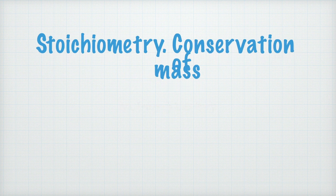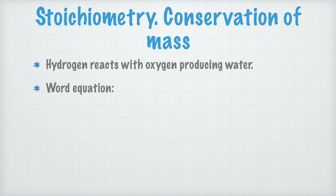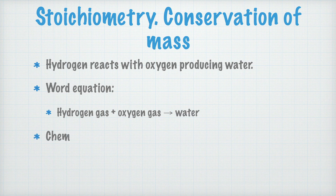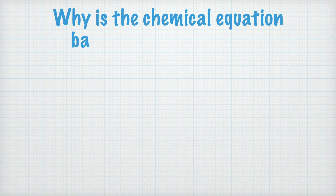To learn this, let's start with the real classic: how hydrogen and oxygen react to form water. Starting with a word equation — hydrogen gas plus oxygen gas turns into water. The chemical equation, I'm sure you've already seen it several times: two hydrogen molecules plus one oxygen molecule turn into two water molecules. We're going to study in greater detail why there are two hydrogen molecules that react, and why two water molecules form. Take this to your notes: why is the chemical equation balanced?